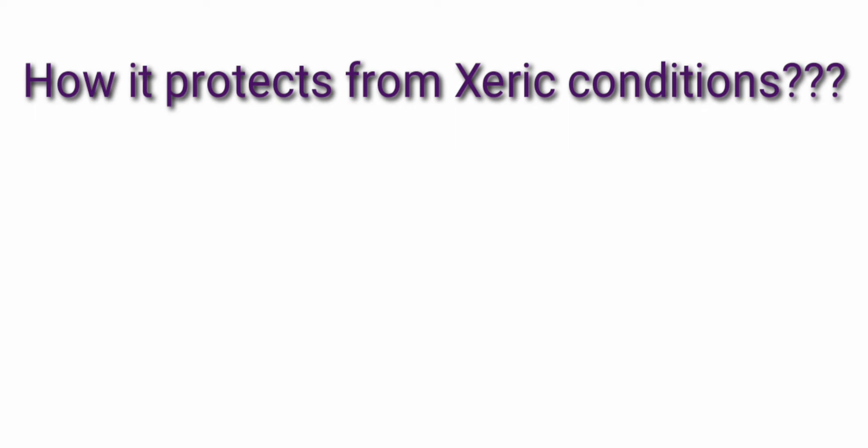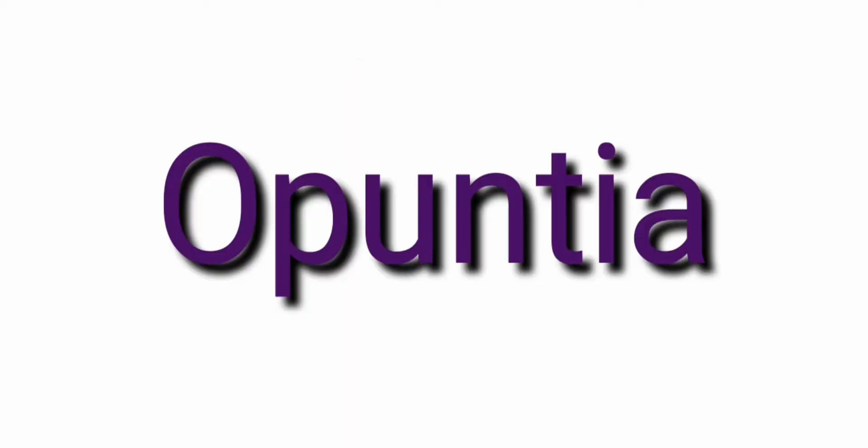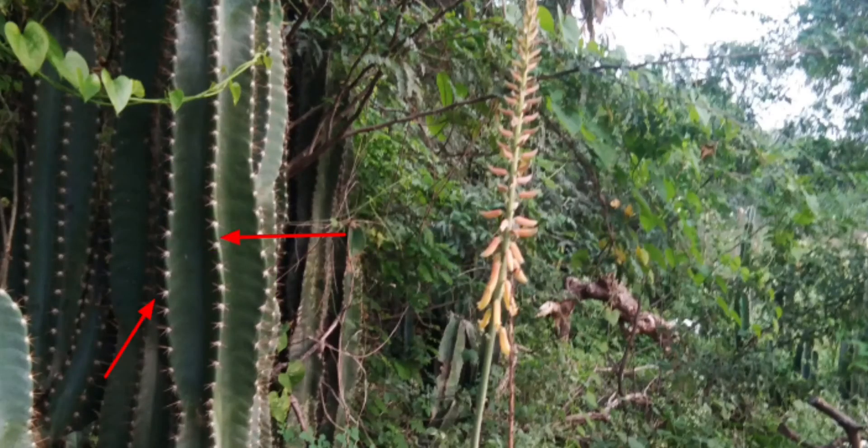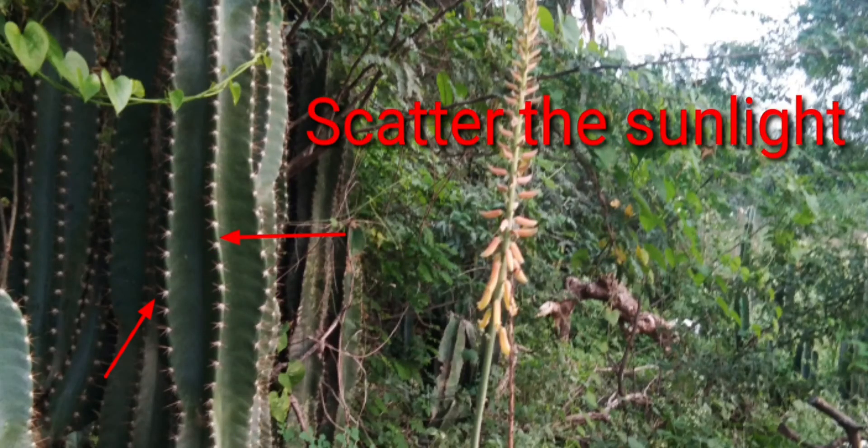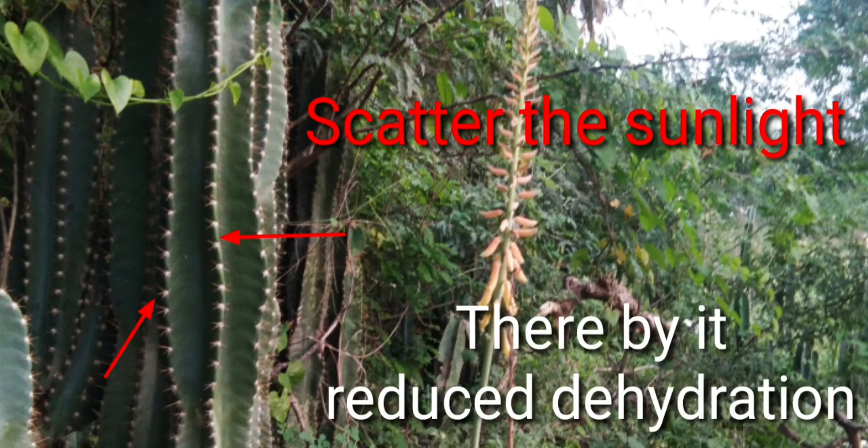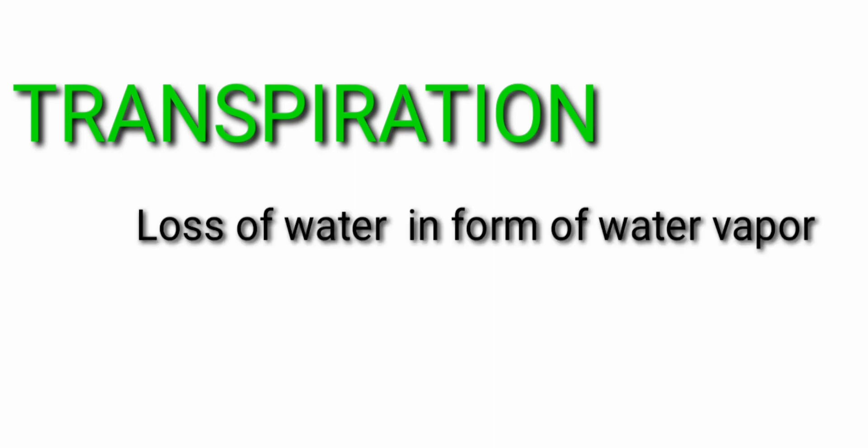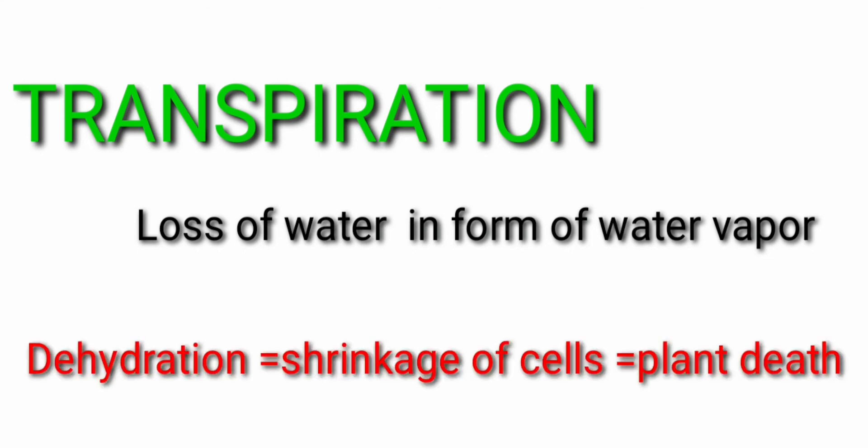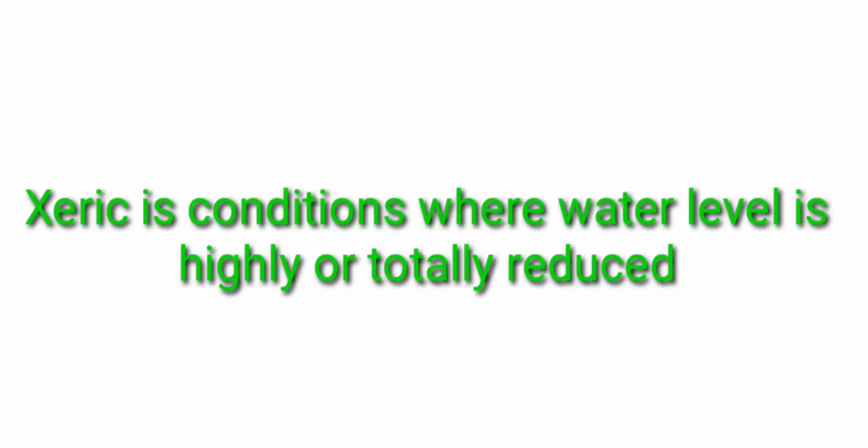Next, how does it protect from the xeric condition? The plants like Opuntia have the spines which help to scatter the sunlight, thereby it reduces the dehydration. When the sunlight reaches the whole plant, it starts transpiration process. So water is removed from the plant body in the form of water vapor. So dehydration takes place which results in death of plant. To avoid that one, reduce the dehydration in the presence of spines, because in xeric conditions already water supplement is totally reduced. So to overcome this, spines help in this way.